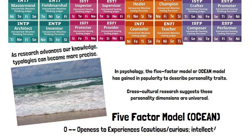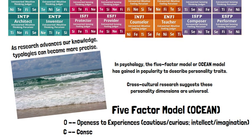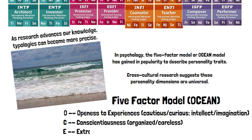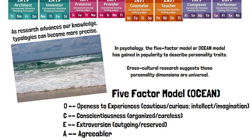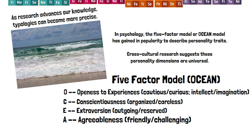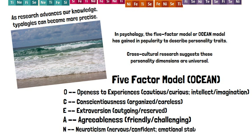Let's look at these five factors. The first is openness to experiences — how cautious or curious we are; it deals with our intellect and imagination. The second is conscientiousness — how organized or careless we are in our day-to-day activities. The third is extraversion — how outgoing or reserved we are, very similar to the Myers-Briggs classification. Fourth is agreeableness — how friendly or challenging we are in interactions with others. And the fifth is neuroticism — how nervous or confident we are; it gets at the idea of emotional stability.